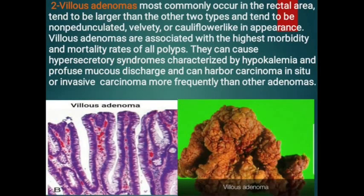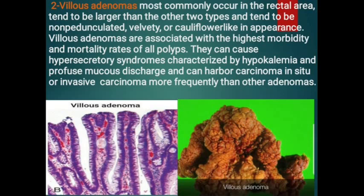The second type, villous adenomas, commonly occur in the rectal area. Villous adenomas are less common than tubular adenomas but more likely to have invasive carcinoma and are associated with the highest morbidity and mortality rate. A characteristic syndrome includes hypokalemia and profuse mucous discharge. The gross appearance is cauliflower-like. This type of adenoma is sessile rather than pedunculated and larger than tubular adenoma. Microscopically, we see papillary or villus-like projections with larger, darker, and elongated nuclei with higher atypia.